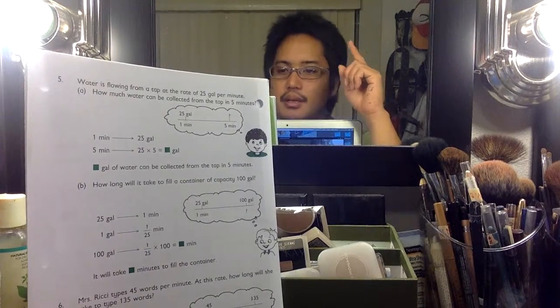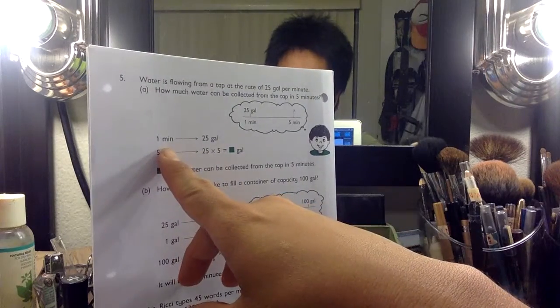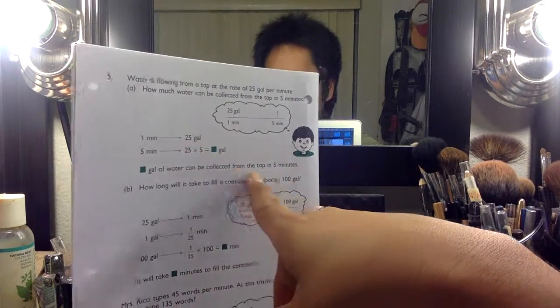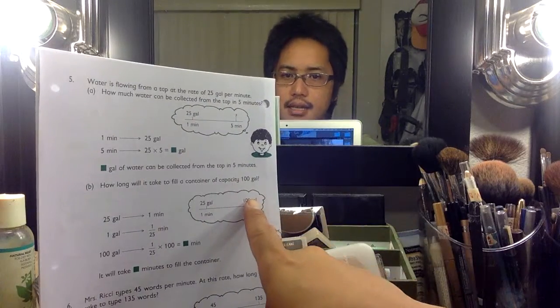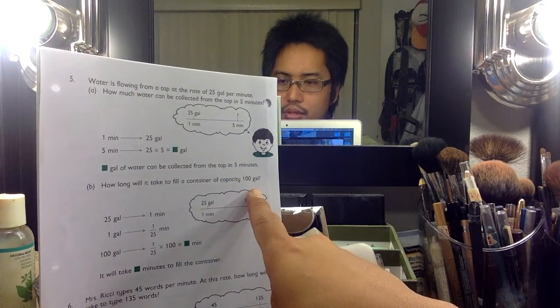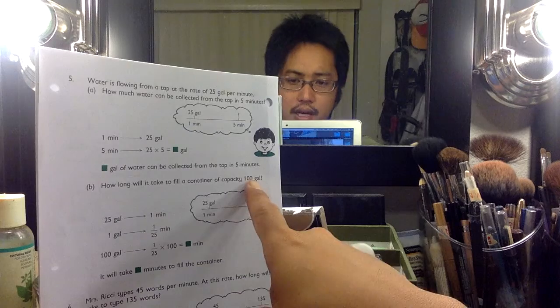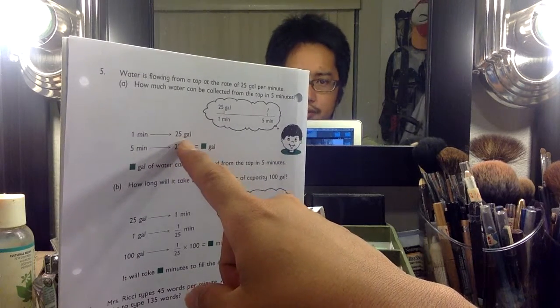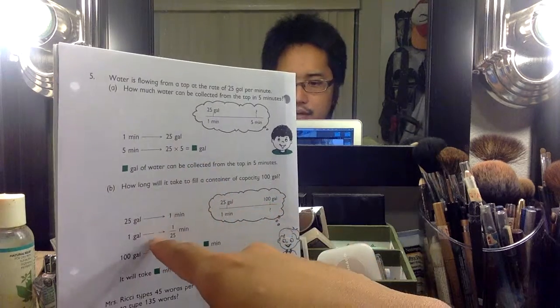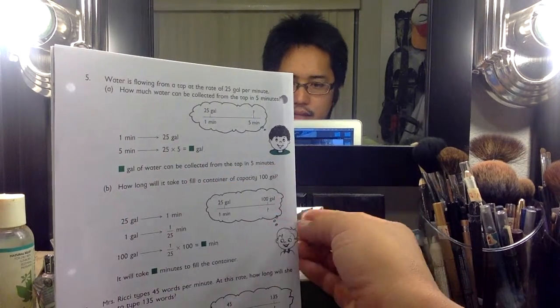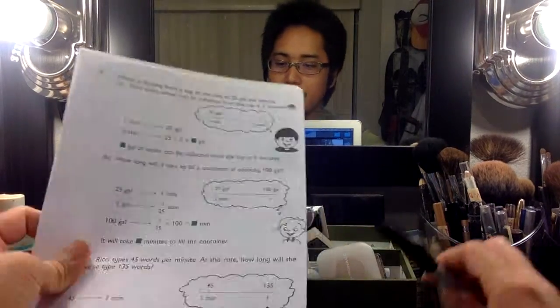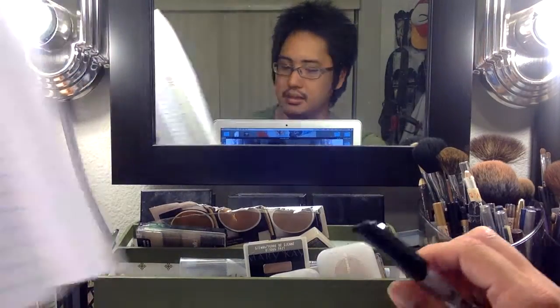this. If it takes one minute to fill up 25 gallons and you want to fill up a hundred gallon tank, then in order to fill that 100 gallon tank up you would need four times this 25 gallons, so it would take you four minutes all together. That's it. The more mathy way of doing that, let's do it